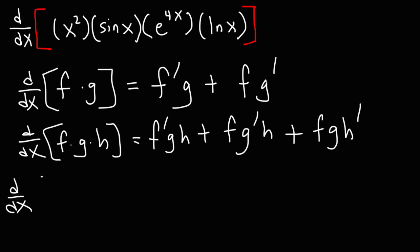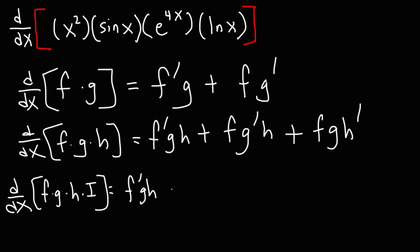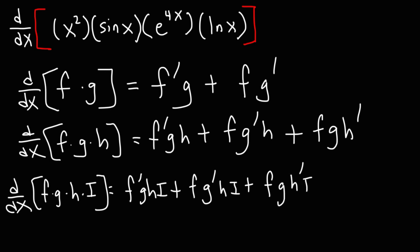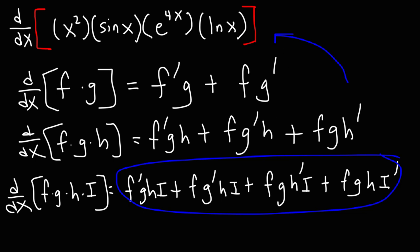For four terms, we follow a similar pattern. The derivative of f times g times h times i is going to be f prime g h i, plus f g prime h i, plus f g h prime times i, plus f g h i prime. We're going to use this formula to find the derivative of the expression.